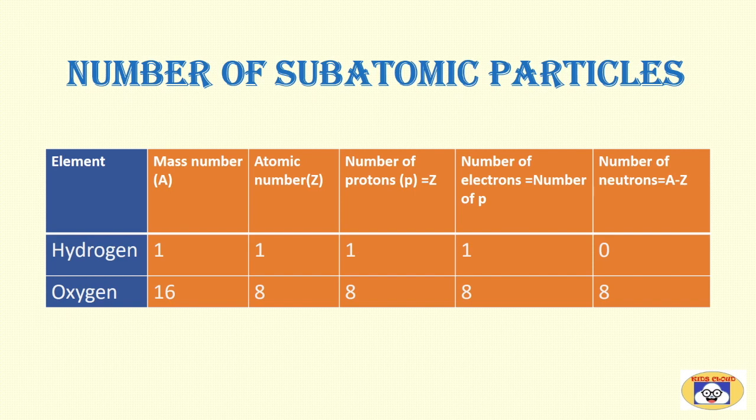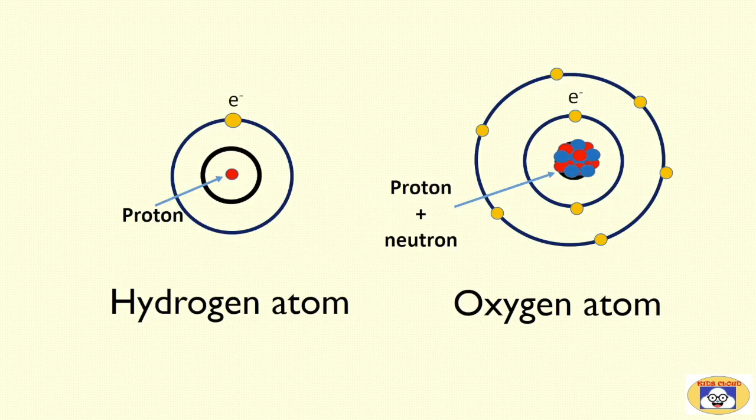Mass number and atomic number of hydrogen and oxygen are shown in this table. From this information we can calculate the number of protons, number of electrons and number of neutrons present in both of these elements. Hence, in case of hydrogen, number of protons is equal to number of electrons and that is equal to 1. And there is no neutron present in the hydrogen atom.